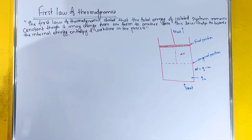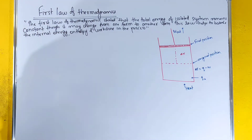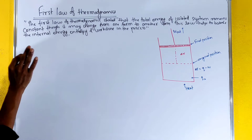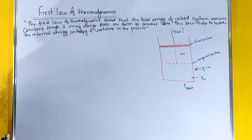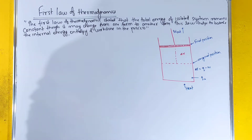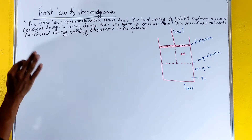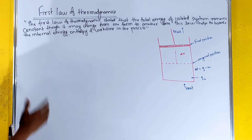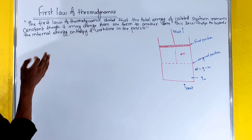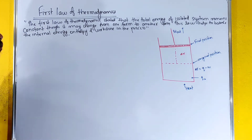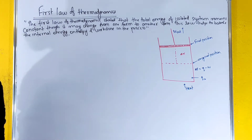The first law of thermodynamics states that the total energy of an isolated system remains constant, though it may change from one form to another form. This law helps to balance the internal energy, enthalpy, and work done in the process.